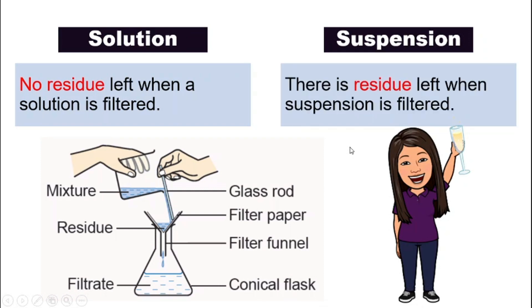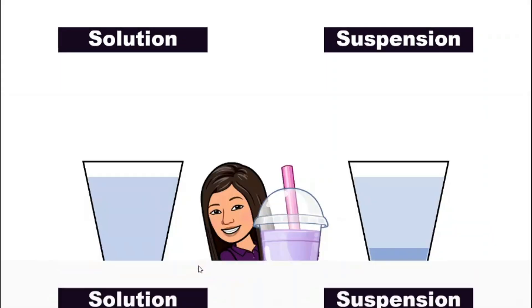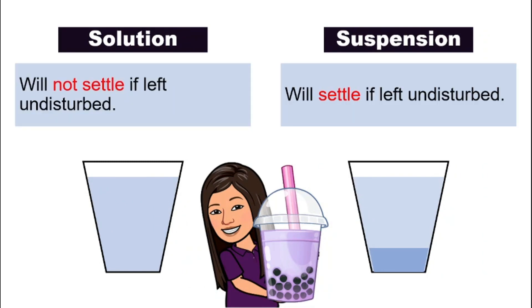How about suspension? If we try to filter the suspension, we will find some residue on the filter paper. So with sand water, if we filter it, we will see the sand being left behind on the filter paper. And for solution and suspension, if we leave them on a table for a while, the solution will not settle — if we leave it undisturbed, it will still be sugar water; the sugar and water do not separate. But for suspension, for example sand water, it will settle. If we leave it alone for a while, you will see that the sand will eventually settle at the bottom of the glass. So that is suspension.